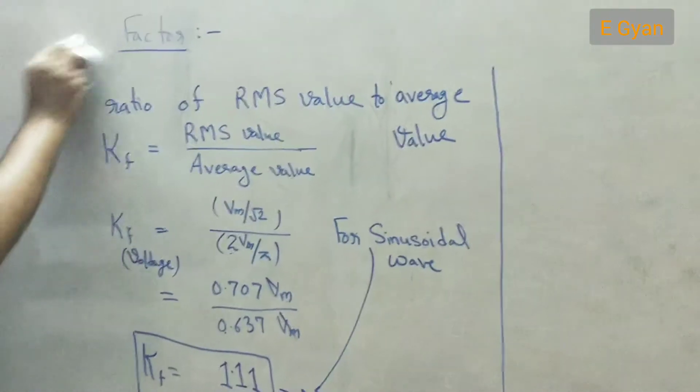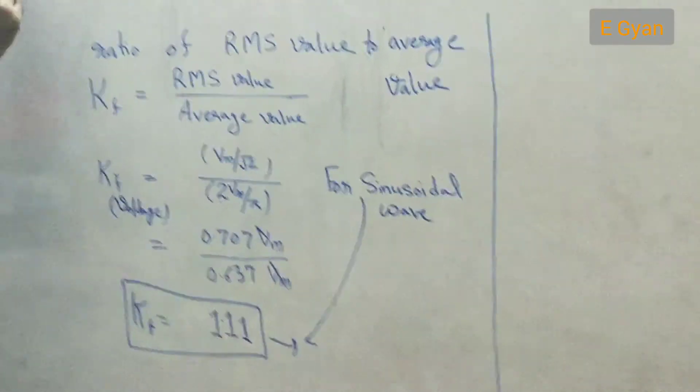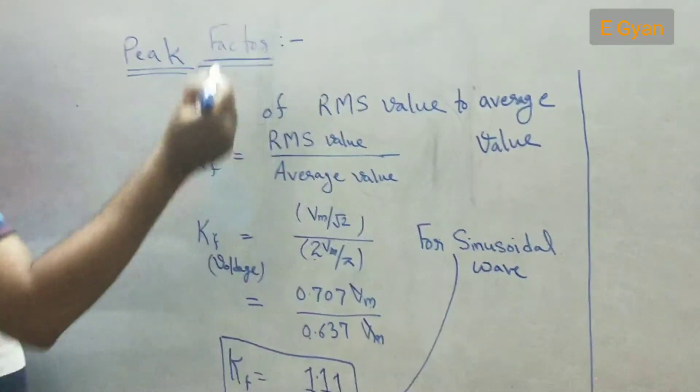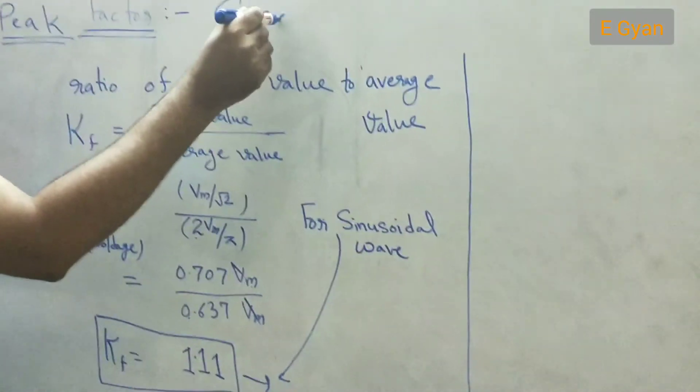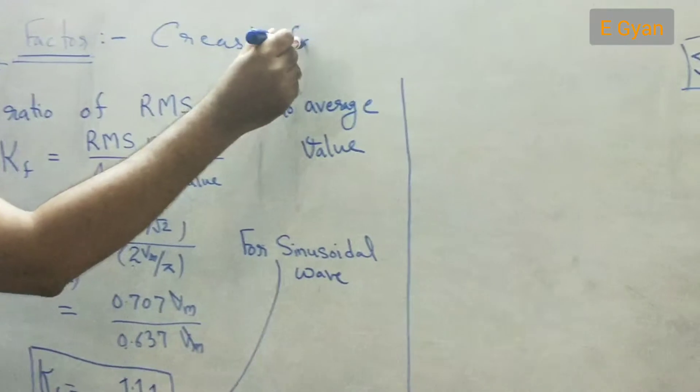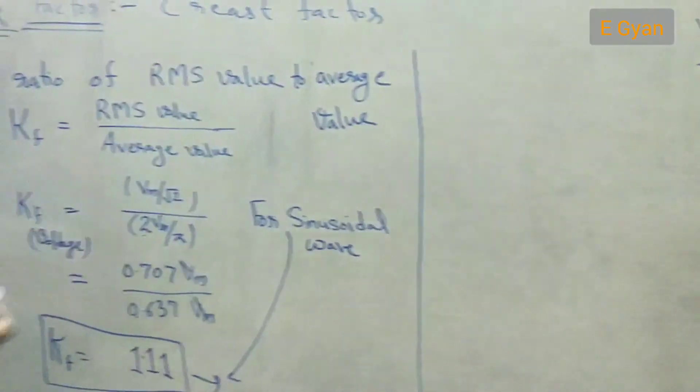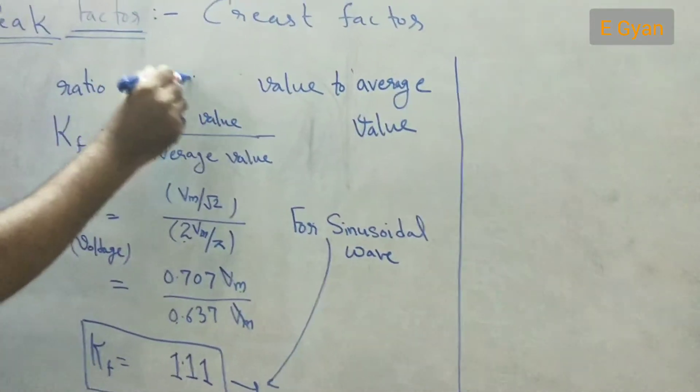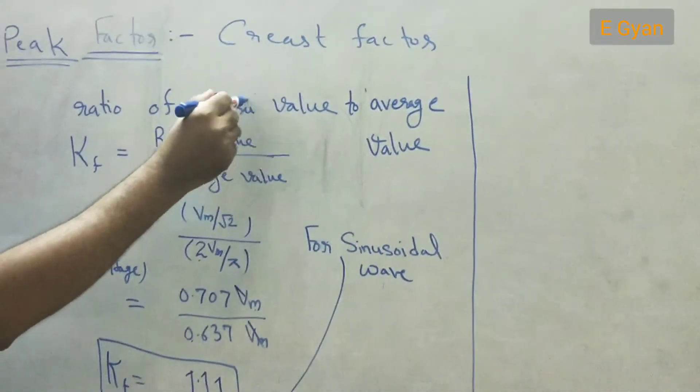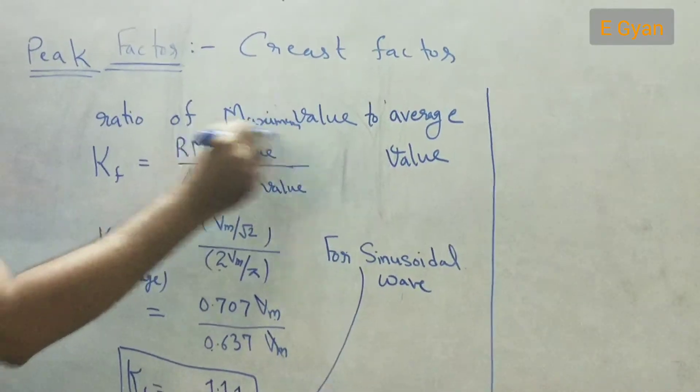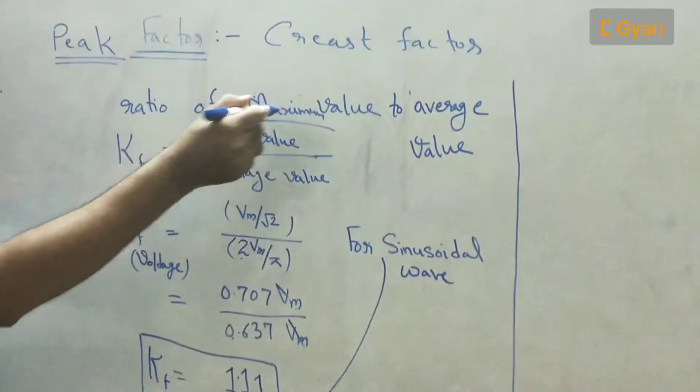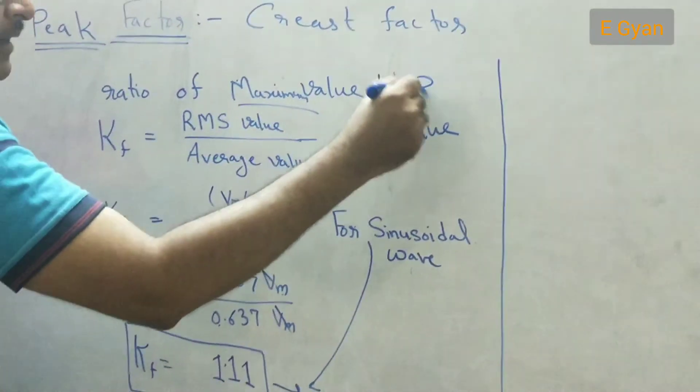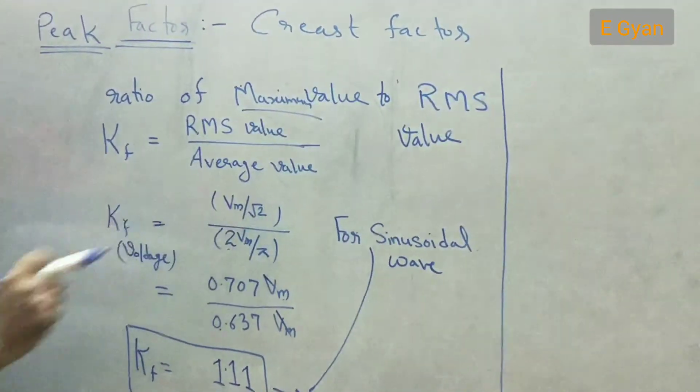Now one new factor which is also very important in our electrical engineering is peak factor. It is also known as crest factor. So what is this? It is the ratio of maximum value as its name is peak factor.